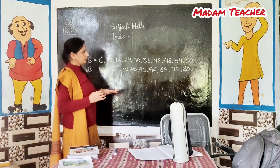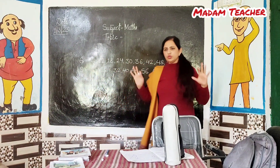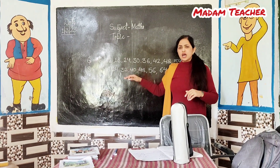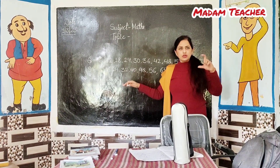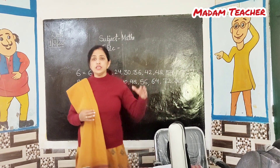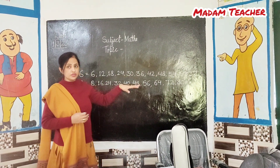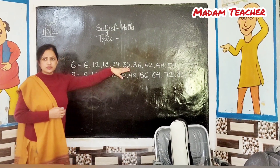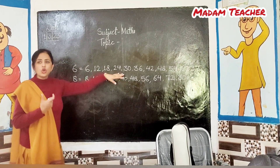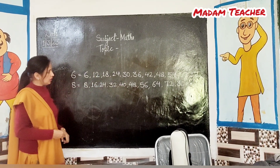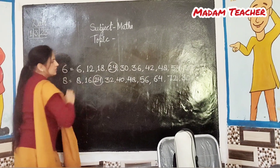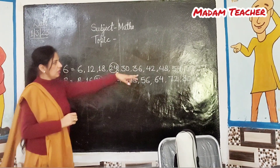Now see — you all know the tables of 6 and 8. What numbers are common? That means the same. What are the common numbers in both the tables — in the table of 6 and 8? 24. Very good. And 48.